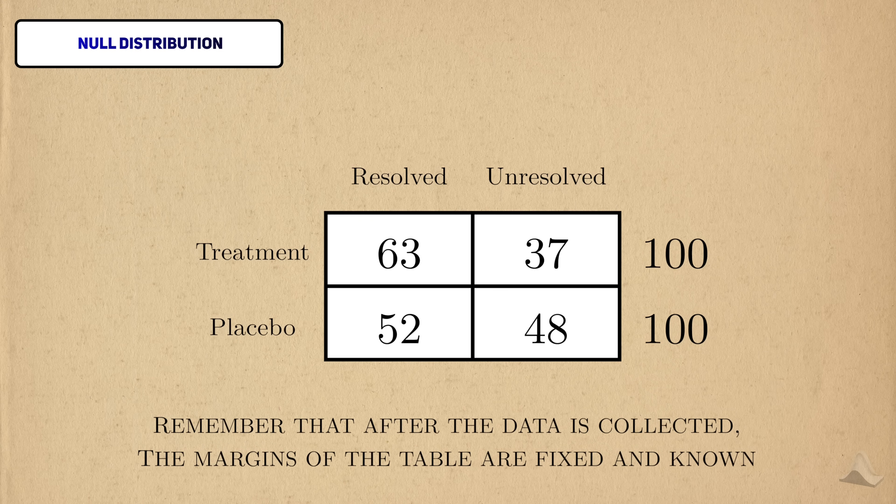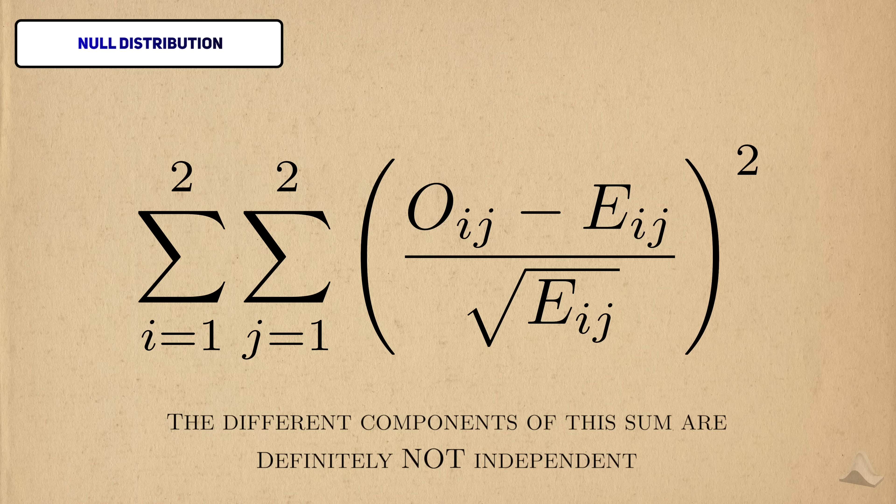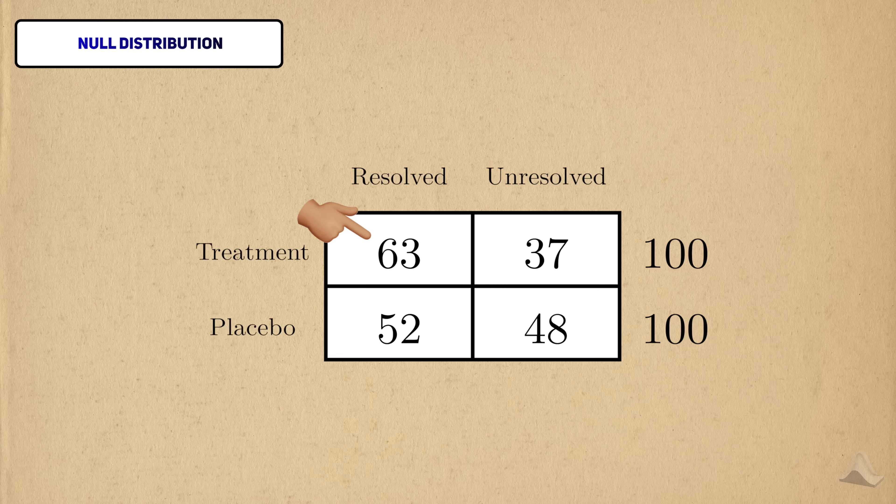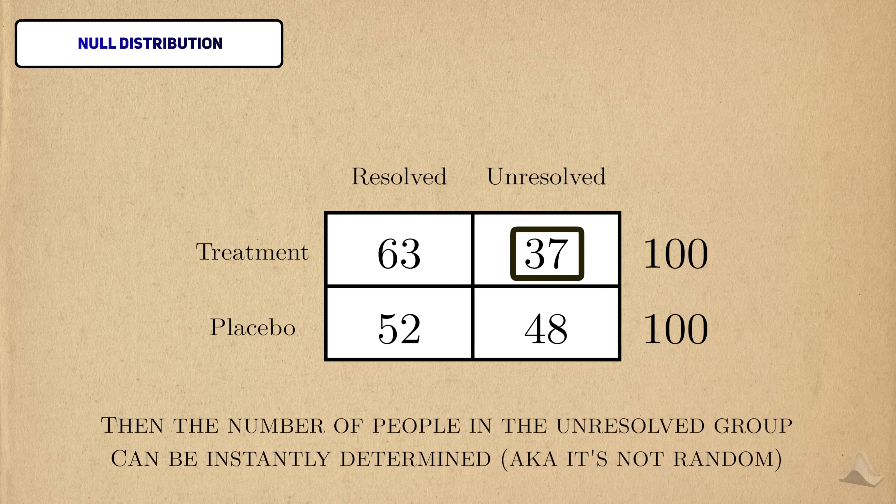Remember that once the data is collected for our future clinical trial, both the results and sample size are fixed. This means that the different components of the sum are definitely not independent of each other. If I know how many people in the treatment group have their migraine resolved, then I can instantly determine how many people still have their migraine, since the group sizes were fixed. Similarly, I can also figure out how many people in the placebo group have their migraine resolved.